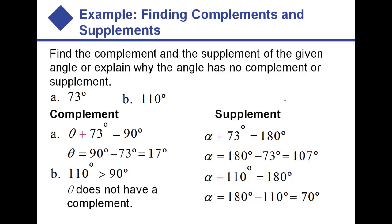Find the complement of 73 — it's just whatever you add to 73 to get to 90, so 90 minus 73 is 17. The complement of 110 does not exist because you would need to add a negative angle, and the definition requires positive angles. But we can find the supplement of 110, which is simply 70, as shown on the right.